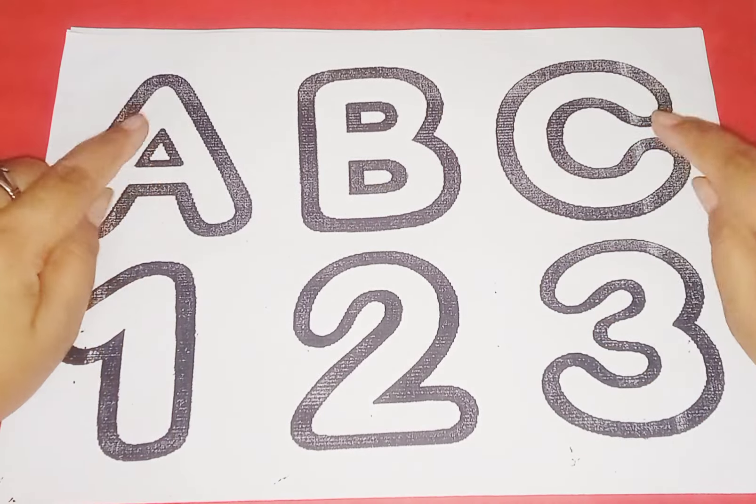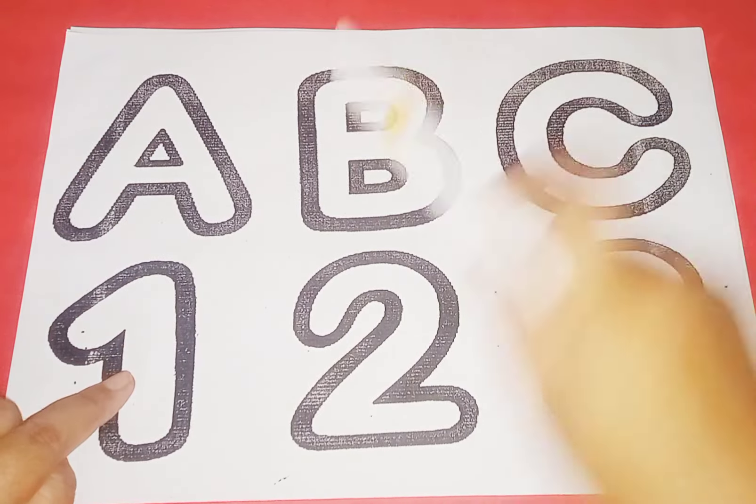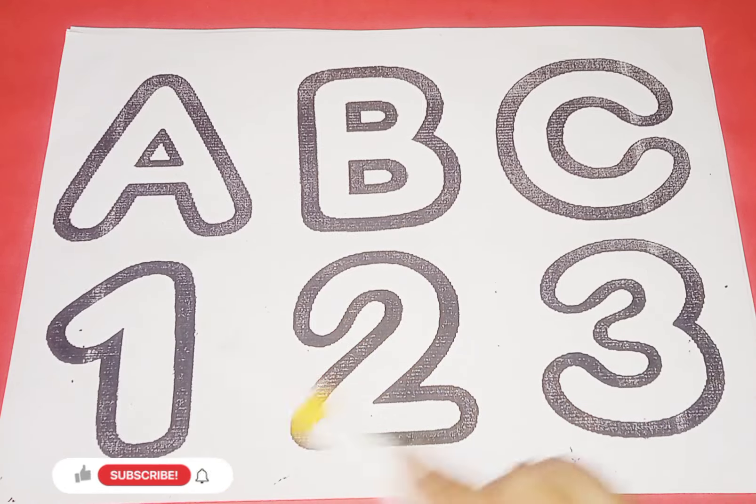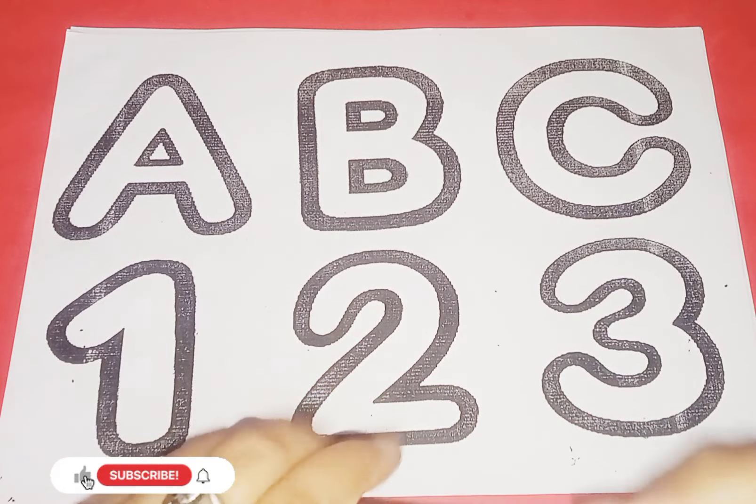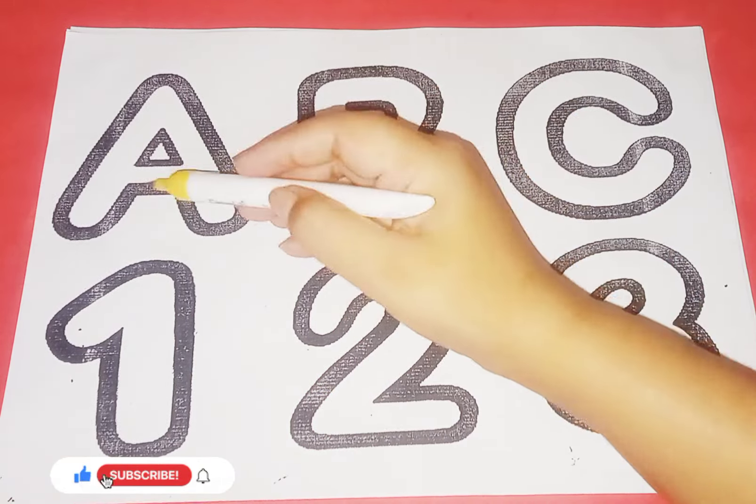So kids, now we learn alphabets and numbers. Alphabet A, B, C, number 1, 2, 3. Yellow color, alphabet A.